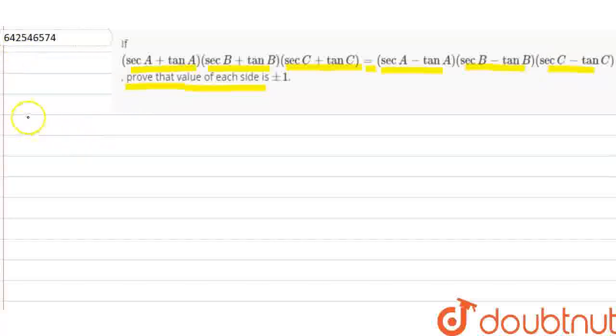Now what we do is, just assume that sec A plus tan A into sec B plus tan B into sec C plus tan C is equal to what? Assume this is x.